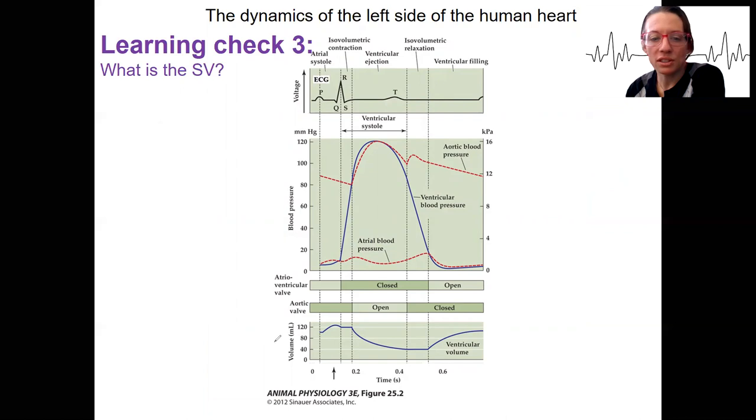I want you to look down here and determine stroke volume. So there is end diastolic volume. End diastolic volume is about 125 milliliters. And systolic volume is about 40 milliliters.